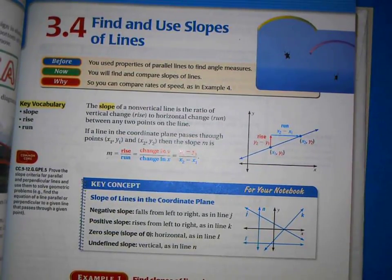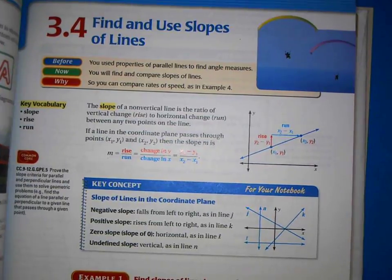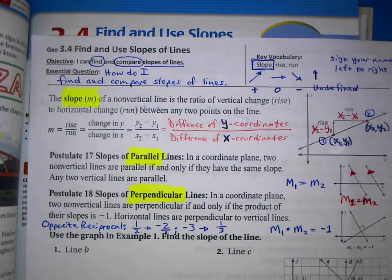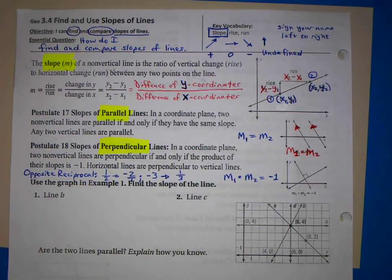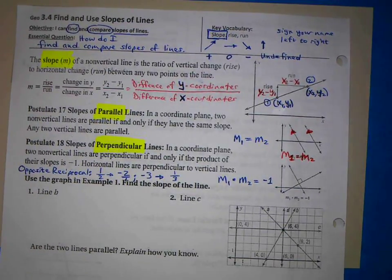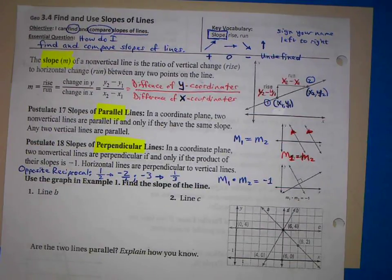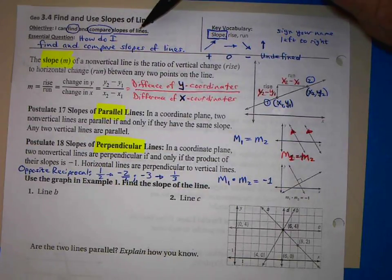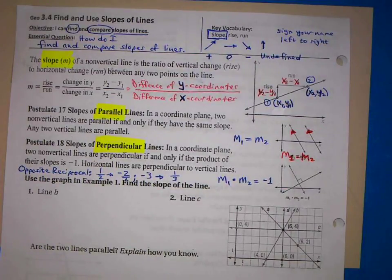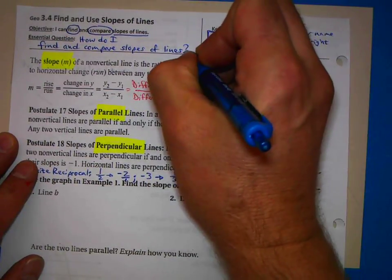This is section 3.4: Find and Use Slopes of Lines. Our objective is to find and compare — two main verbs — and what are we finding and comparing? Slopes of lines. So our essential question is: how do I find and compare slopes of lines?